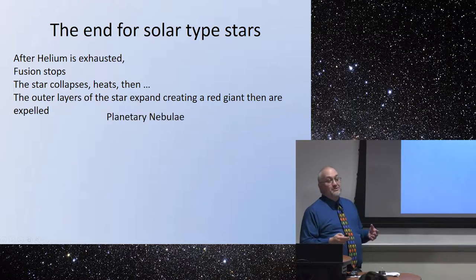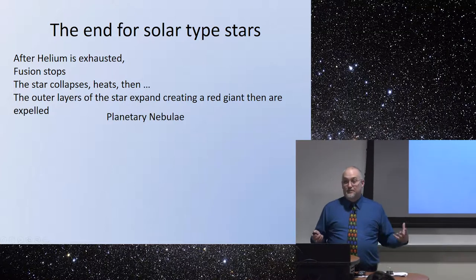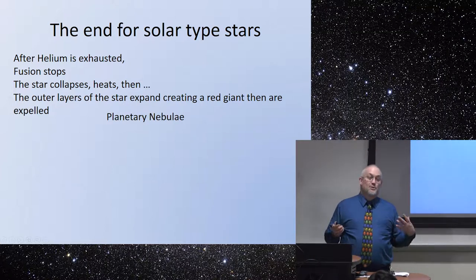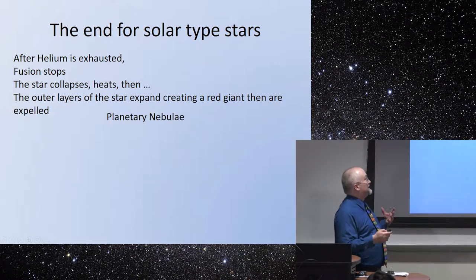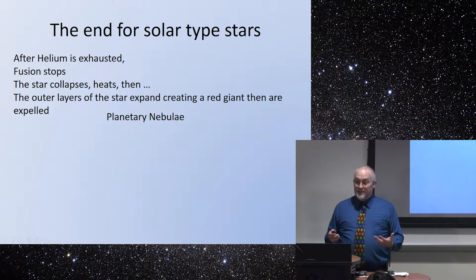For our solar-type stars, after the hydrogen is exhausted the fusion stops — you run out of fuel, just like a car that runs out of gas. When the star runs out of hydrogen gas it stops fusing hydrogen into helium, so that radiation pressure stops and gravity takes over. The star starts collapsing, heats up because of the friction, which causes a burst of energy that pushes the outer layers outward. As they expand outward — expansion being a cooling process — it starts turning red. It expands beyond the size of the original star, so we call it a giant, and it becomes a red giant.